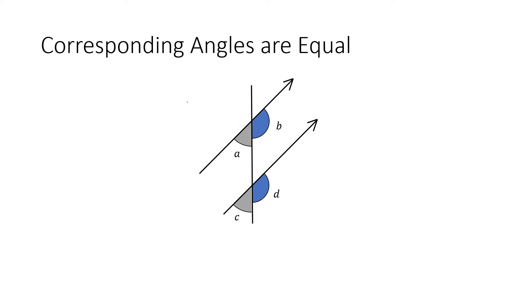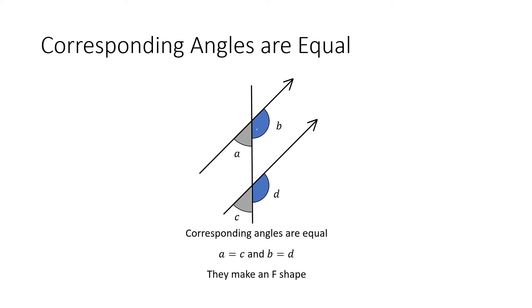Our next angle type: corresponding angles are equal. Again they are colour coordinated — B is equal to D and A is equal to C. The way to identify a corresponding angle is because they make an F shape. Inside the top part of the F and inside the bottom part of the F, those angles are equal to each other. Drawing A and C gives a funky backwards F.